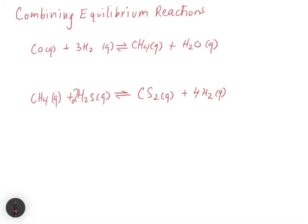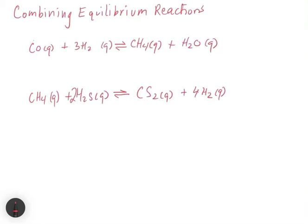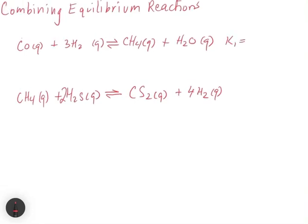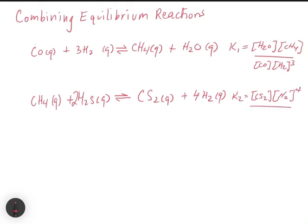So in this case, what we can do is we can write equilibrium constants for both of these reactions. So we can write an equilibrium constant for K1, which is going to equal the H2O times the CH4 divided by the CO times the H2 cubed. And we can write an equilibrium constant for the second one, which will be the carbon sulfide times the H2 to the fourth divided by the CH4 times the H2S squared. So we have K1 and K2.